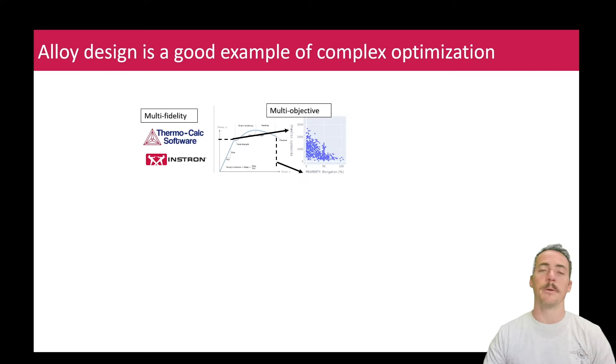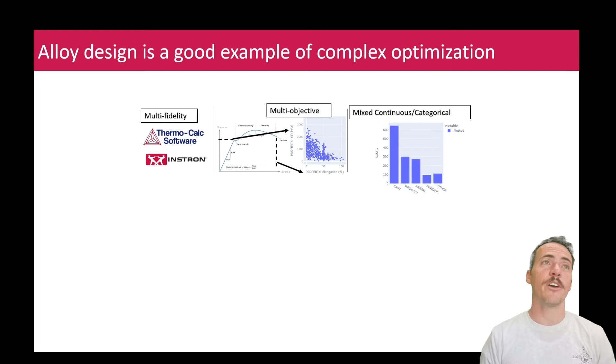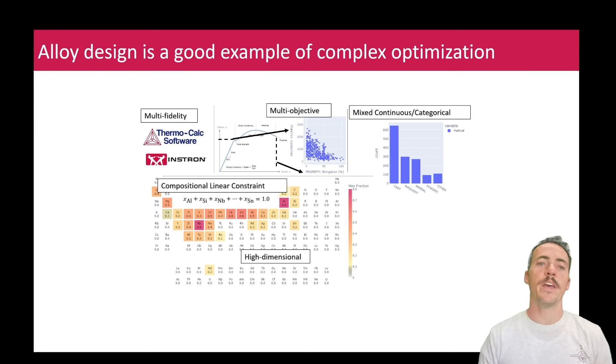You care about density, you care about strength, you care about oxidation resistance, on and on, right? Multiple objectives. We very often have a mixture of both continuous variables like, let's say, sintering temperature, as well as categorical variables, things like, you know, was it cast or wrought or forged or annealed, right? These different things are very different categories. We have this compositional linear constraint where we represent a formula as adding up to one, right? AL203. In alloys, we usually boil that down so that all the values add up to one, right?